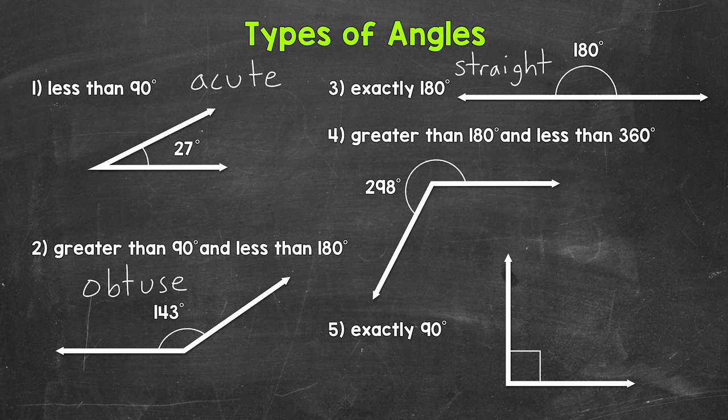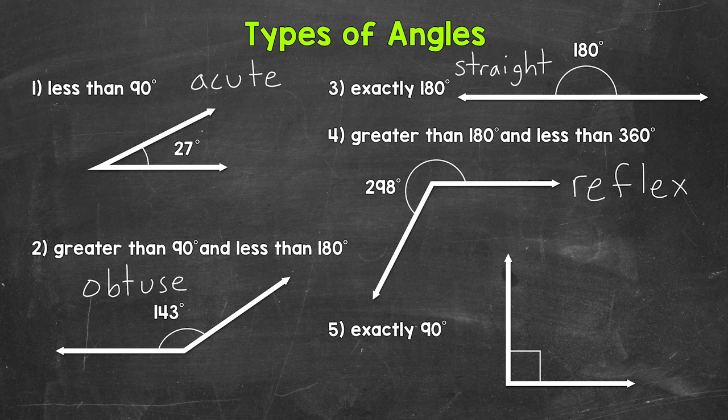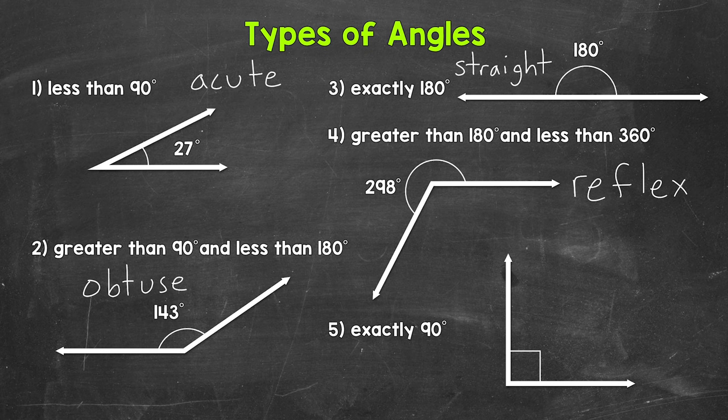Let's move on to number four, where we have an angle that measures 298 degrees. This is an example of a reflex angle. Reflex angles are greater than 180 degrees and less than 360 degrees. 360 degrees is a full rotation. It creates a full circle.